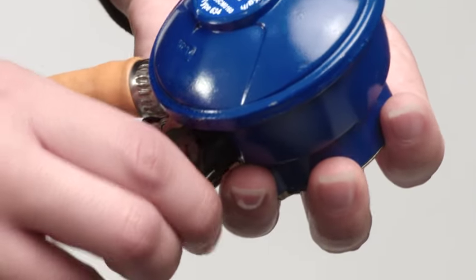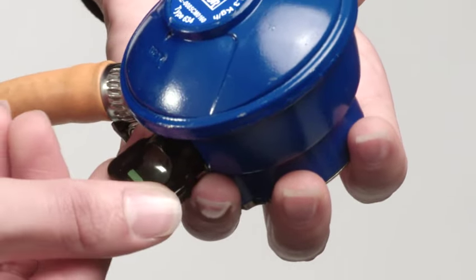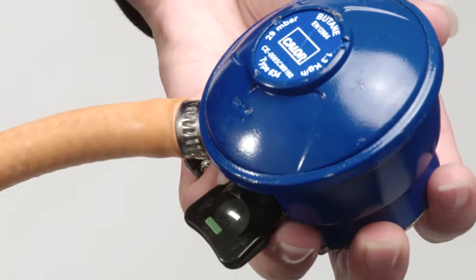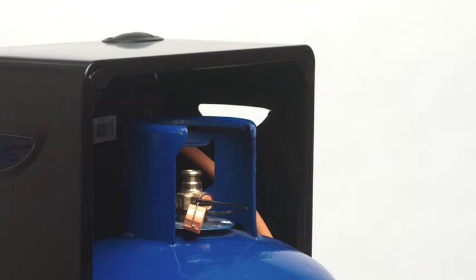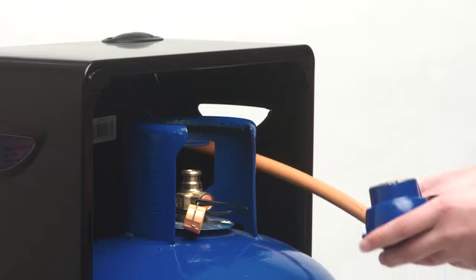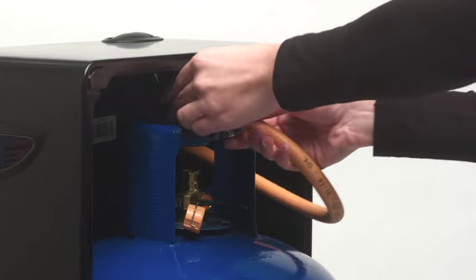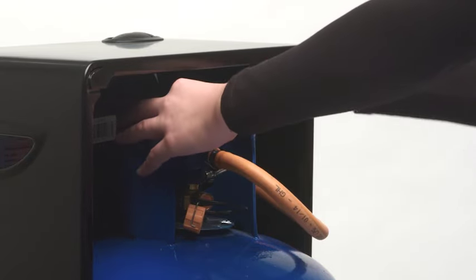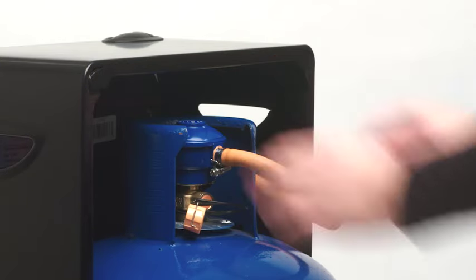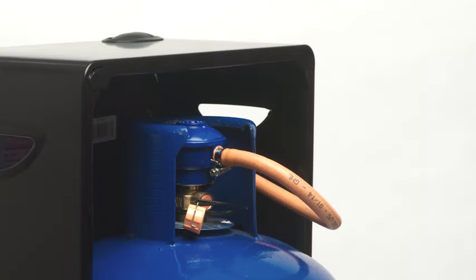The switch should be in the off position at this stage, with the green indicator facing upwards, signaling that it's safe to use. Place the regulator down over the gas bottle valve, pressing firmly until you hear an audible click, which indicates that the regulator is in place and your gas bottle is connected.